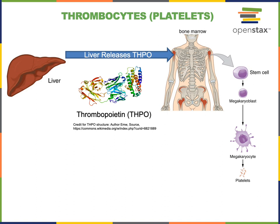Thrombocytes, also known as platelets, are produced from a stem cell in the red bone marrow that differentiates to form a megakaryoblast, which further differentiates into a megakaryocyte. Cytoplasmic fragments then break off from the megakaryocyte and enter the blood as platelets. The primary function of platelets is blood clotting to maintain hemostasis. When a blood vessel is damaged, platelets stick to the damaged vessel wall, become activated, and release clotting factors that stimulate more platelets to stick together, forming a platelet plug that blocks the ruptured vessel to stop bleeding.